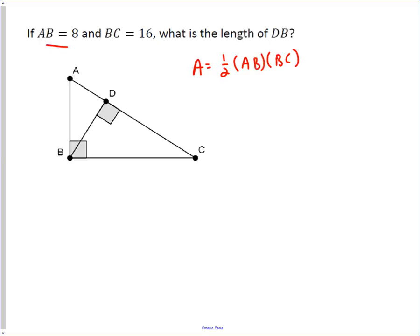We know what AB and BC are, so we can calculate that very easily. One-half times eight times sixteen equals sixty-four.